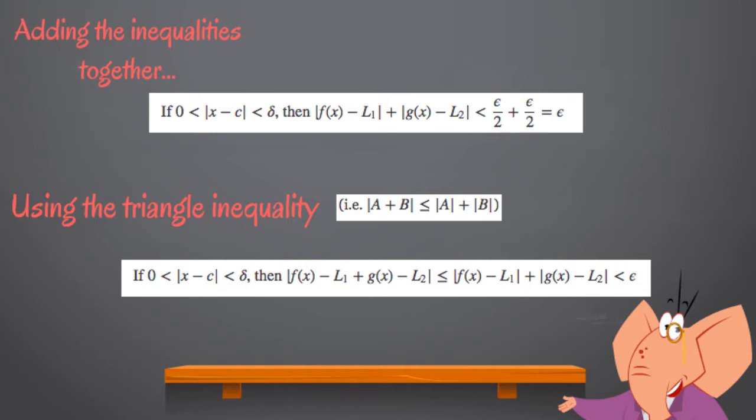We can use the triangle inequality for absolute values, which is |a + b| ≤ |a| + |b|, to discover that if 0 < |x - c| < delta, then |f(x) - L1 + g(x) - L2| ≤ |f(x) - L1| + |g(x) - L2| < epsilon. Finally,